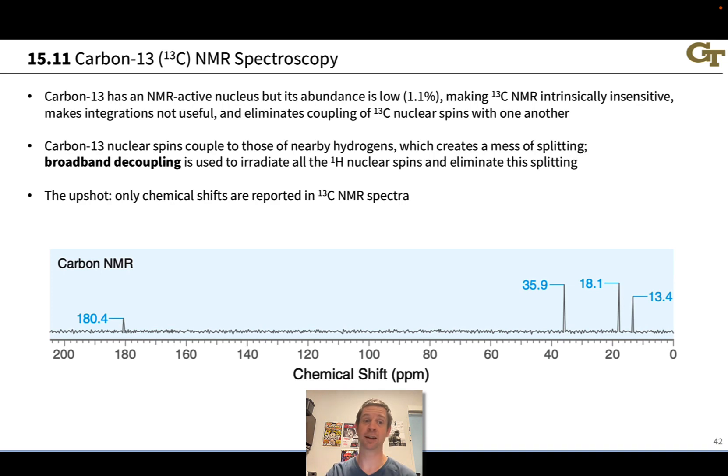Carbon-13 NMR, while useful theoretically, has a number of practical limitations. Carbon-13 has an NMR active nucleus with nuclear spin, but the abundance of this isotope is low. Only about 1.1% of carbon atoms are carbon-13. That makes this technique intrinsically insensitive with a low signal-to-noise ratio, and you'll notice a lot of noise in the baseline of carbon-13 NMR spectra because of the low abundance of carbon. This also eliminates coupling of carbon-13 nuclei with each other and makes integrations not useful.